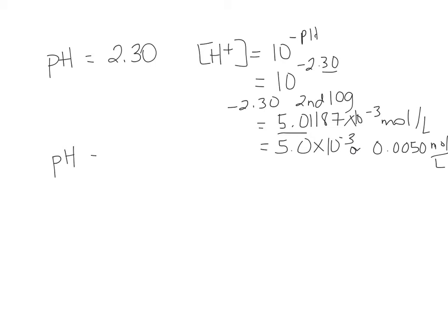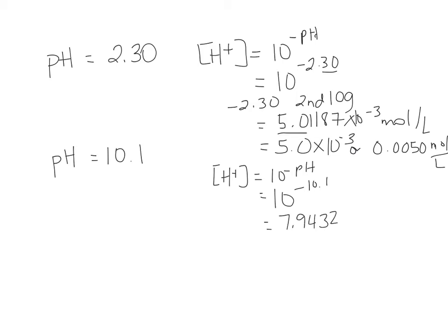What if the pH is 10.1? We want to find the hydrogen ion concentration, so 10 to the negative 10.1, which equals 7.9432 × 10⁻¹¹ mol/L. There is only one decimal place in the pH, so there is only one sig fig in the answer: 8 × 10⁻¹¹ mol/L.